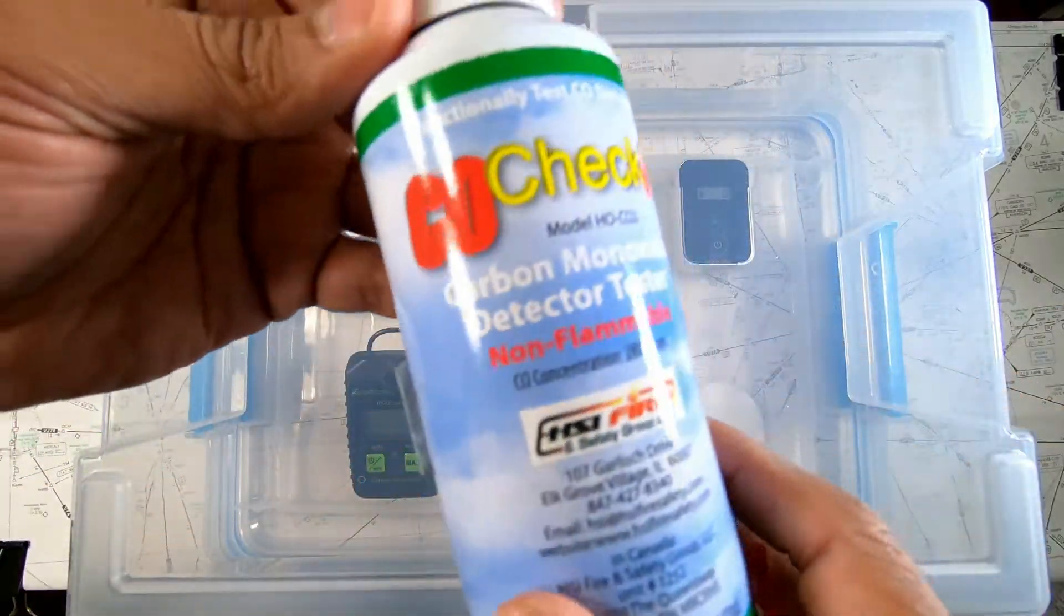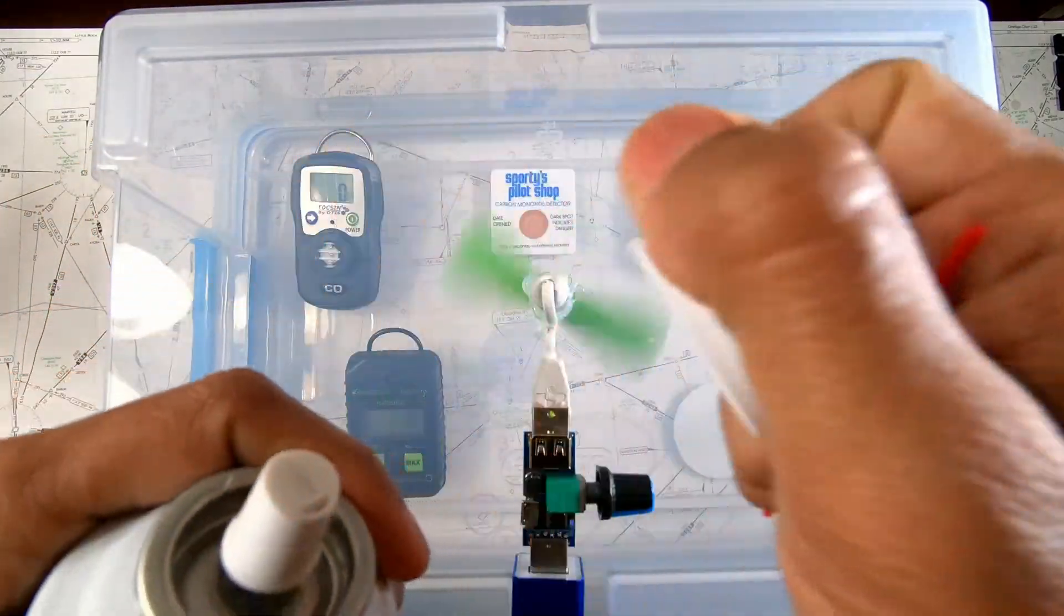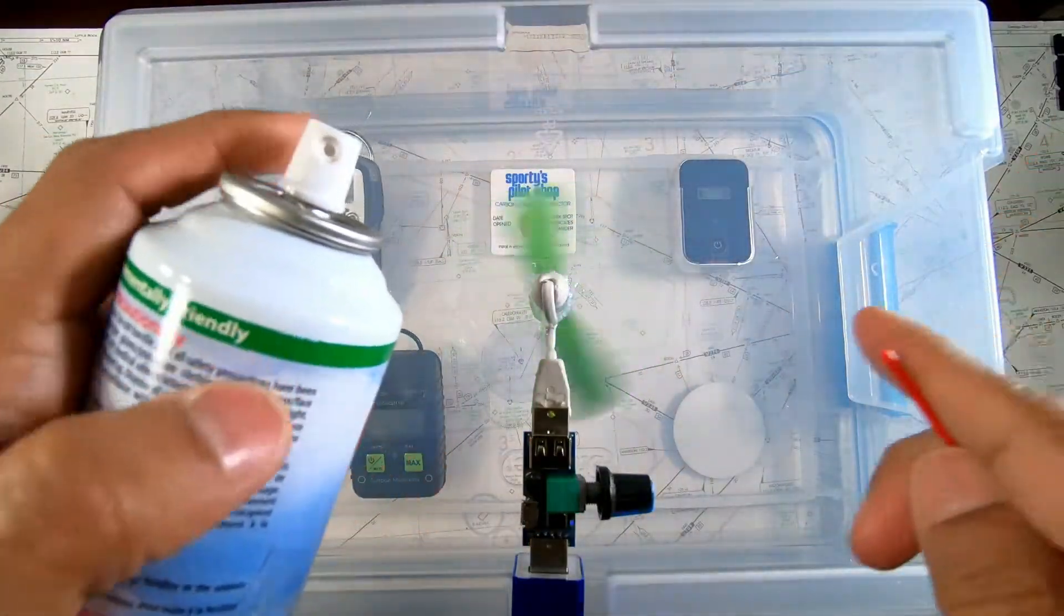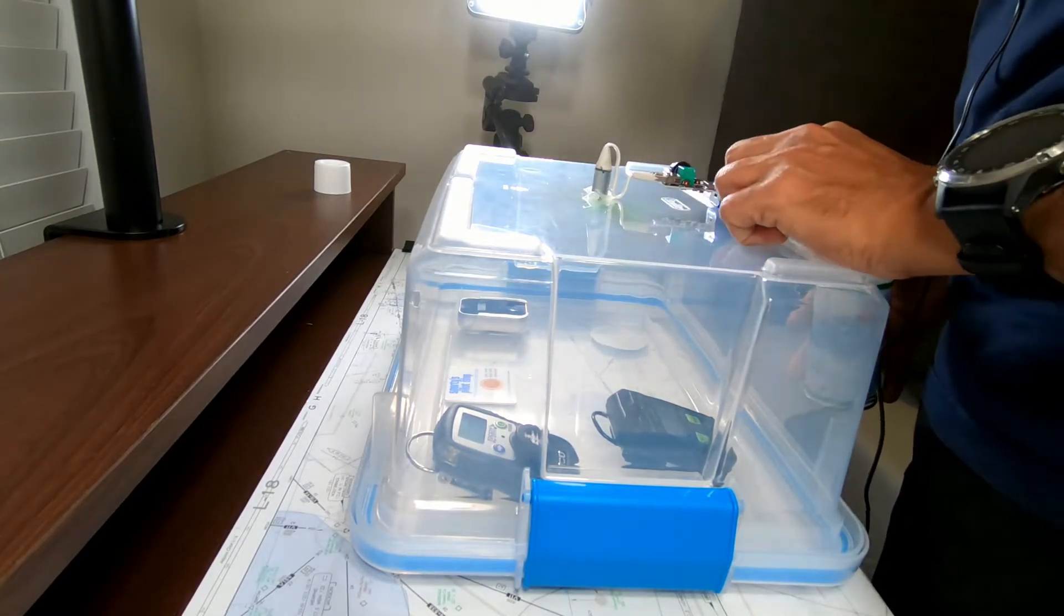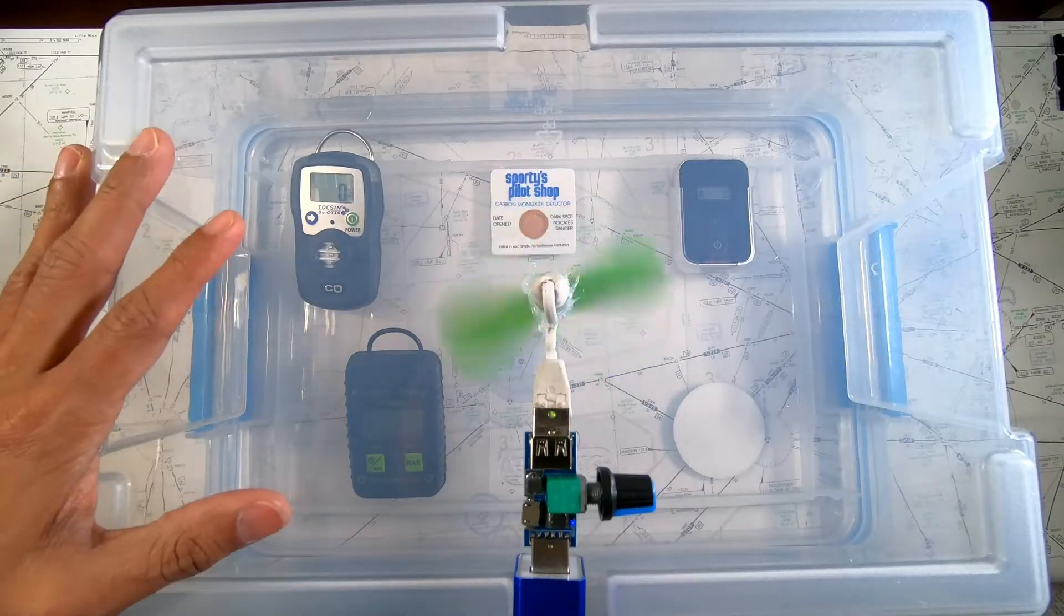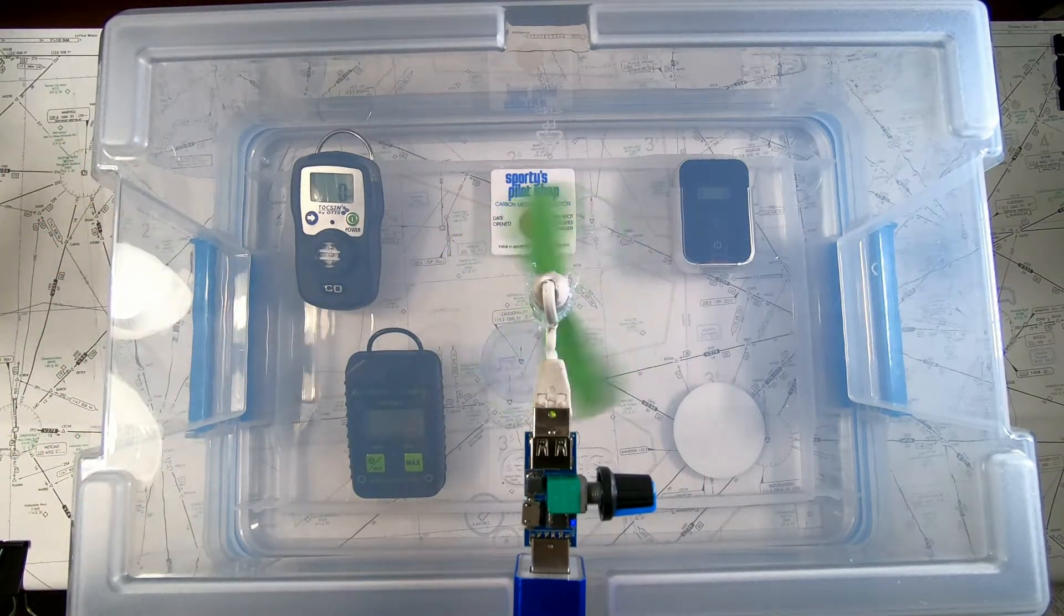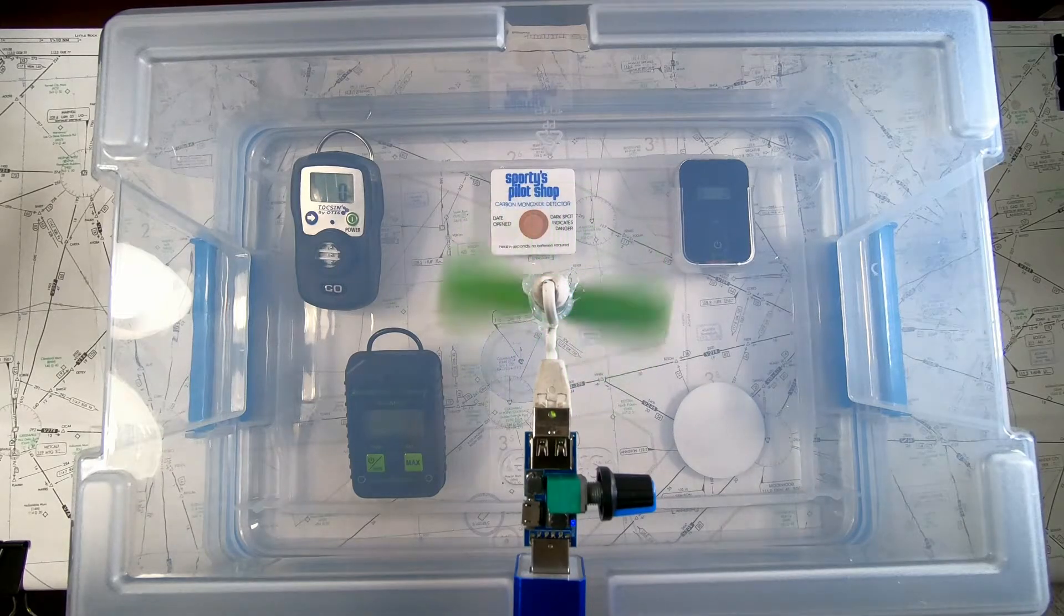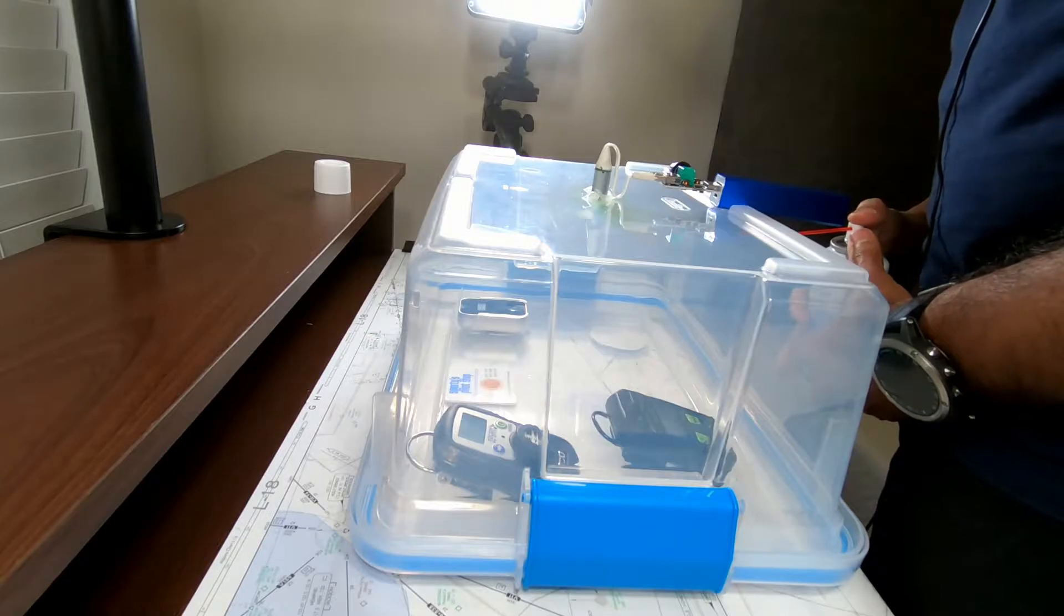So this is the test gas, carbon monoxide test gas that I bought this can from Grainger. Okay, so I am going to be introducing carbon monoxide right now. So right now at this point, all the units are reading zero concentration. They all have been calibrated at the factory. Let's see what happens.